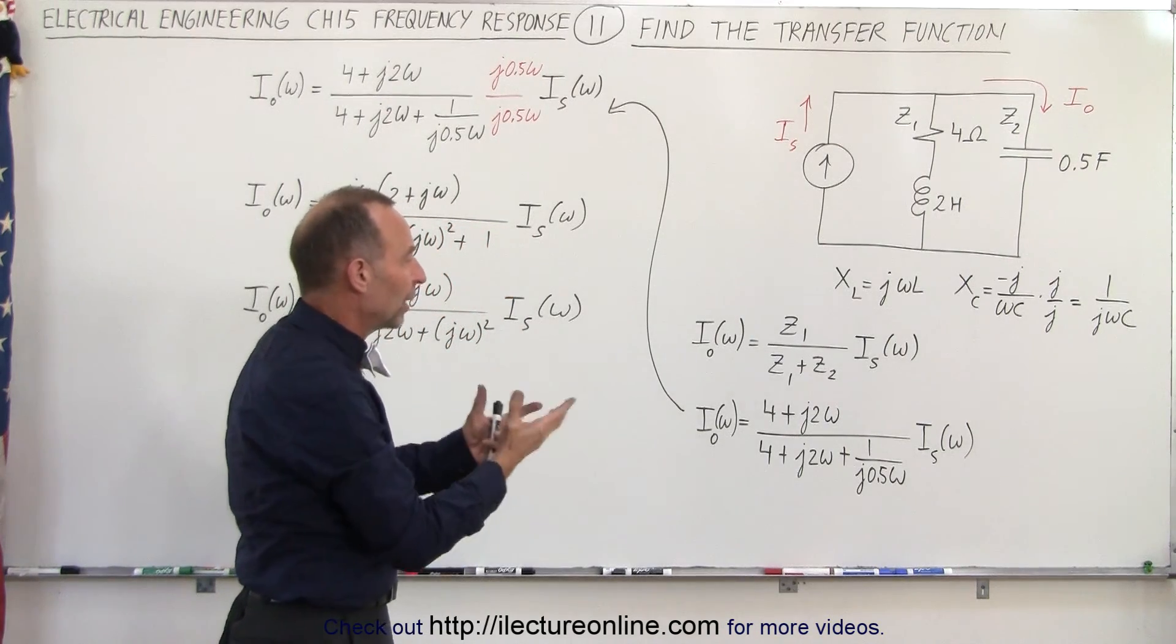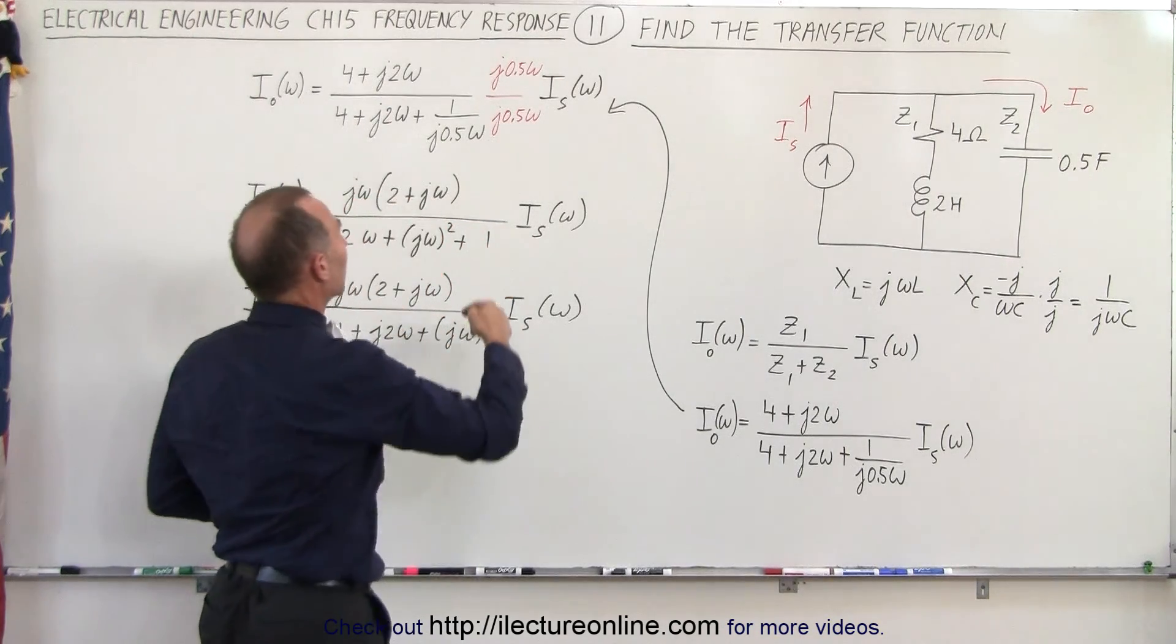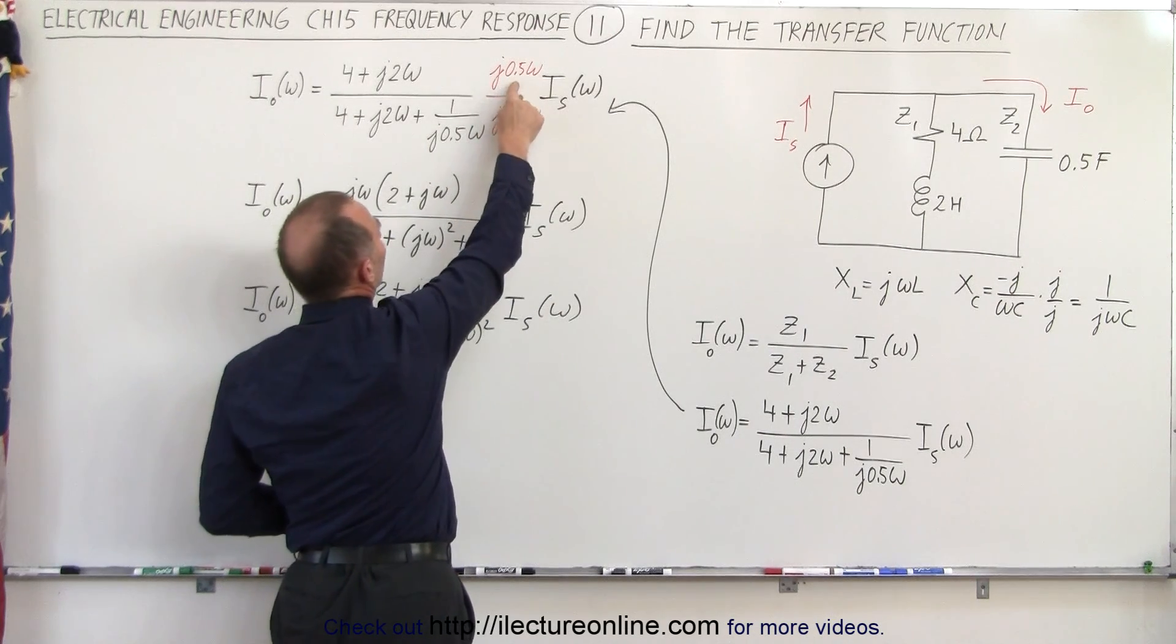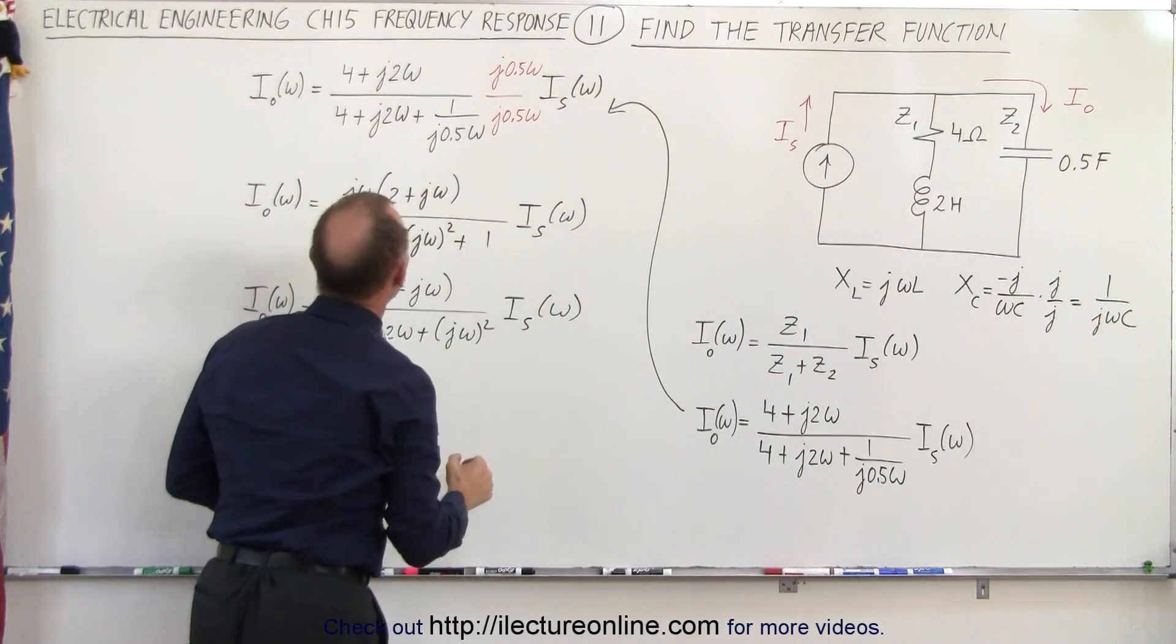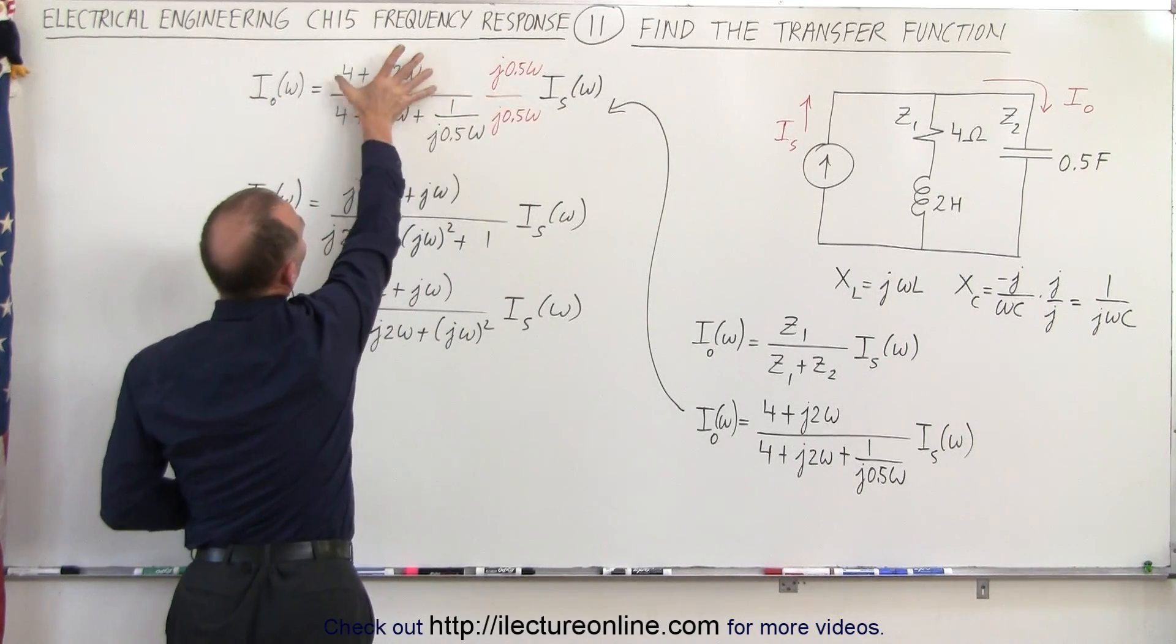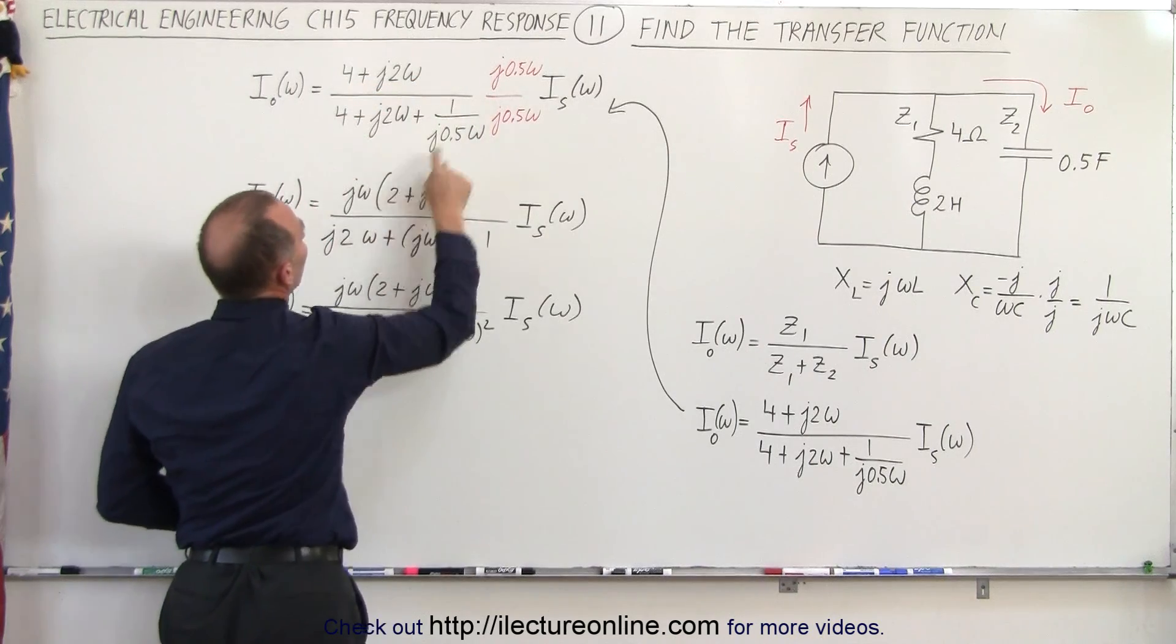And then we just algebraically simplify that. We can do that by multiplying both the numerator and the denominator by J 0.5 times omega. If we do that we end up with J omega times this times 0.5, so 0.5 times 4 is 2, and 0.5 times 2 is 1.